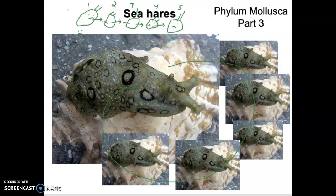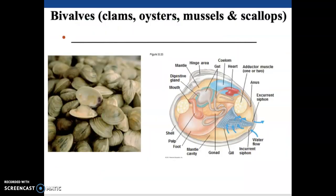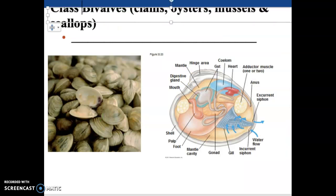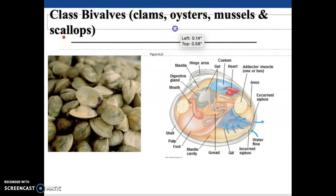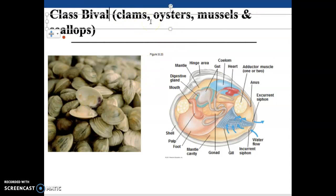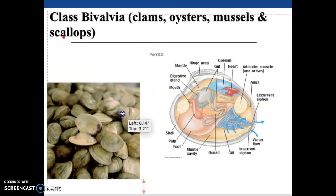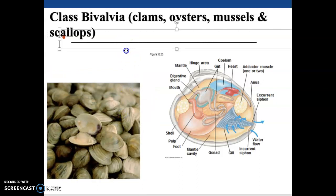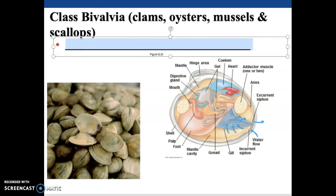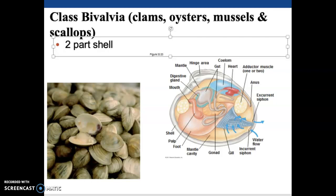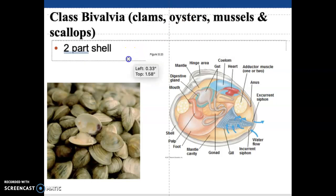Let's move into our third class of molluscs — this will be the bivalves, class Bivalvia. This is our clams, mussels, and scallops. The big key difference here is that these guys have a two-part shell. That's what makes a bivalve — bi meaning two. They have a shell with two parts: a top and a bottom.